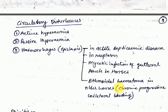Circulatory disturbances: the nasal mucosa is highly vascularized. Active hyperemia is associated with the early stage of inflammation, caused by viral infection, secondary bacterial infection, allergy, trauma, or irritants such as ammonia. Passive hyperemia, i.e., congestion, is a nonspecific lesion.